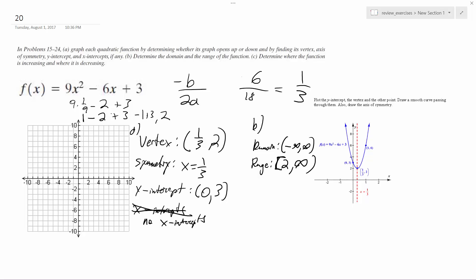And part c, determine if it's decreasing. So it's decreasing from negative infinity to 1 third, and you don't include 1 third because it's neither increasing nor decreasing there. Then it's increasing from 1 third to infinity. And that's it, that's how you solve that.